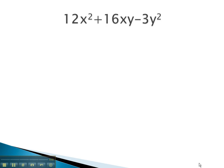We will now look at factoring this problem. Here, we have 12x squared plus 16xy minus 3y squared. Again, we will use the AC method to help us factor it.